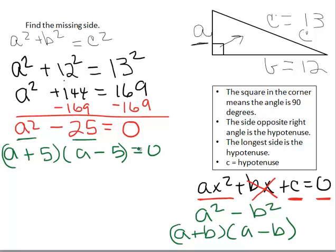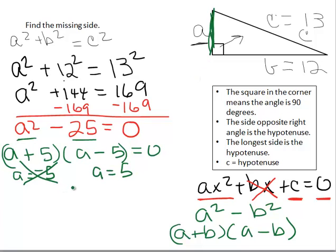One of these have to equal 0 for this to be true. So this is A equals negative 5 or A equals positive 5. And remember, we're dealing with a dimension up here. This is in real life so it has to be a positive number. So this one, we're not going to use it. And instead, we'll use this one. So the missing side is A equals 5.